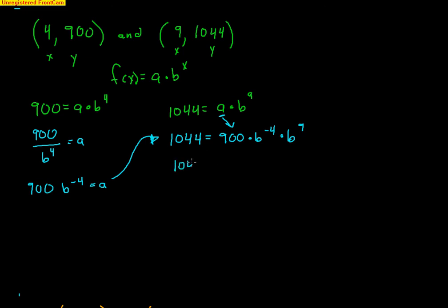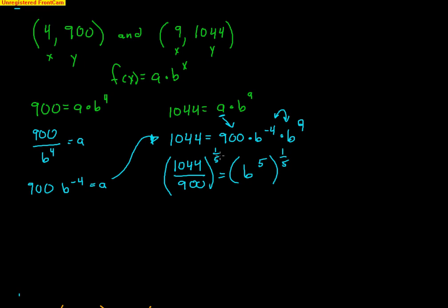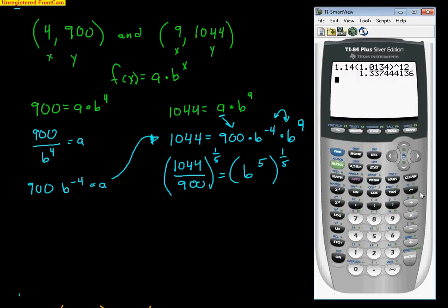So 1044 divided by 900 equals B to the 5th — using the rule that when you have the same base, you add exponents: negative 4 plus 9 equals 5. To solve for B, raise both sides to the 1/5 power, since that cancels the 5th power. Using the calculator: (1044 divided by 900) raised to the (1/5) power gives B equals approximately 1.03.